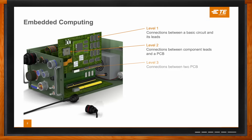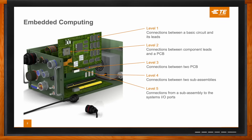Level three — you're looking at connectors that go between two different PCBs, like a plug-in card and the motherboard. Level four would be a connection between two sub-assemblies within the same chassis. Level five covers connections from a sub-assembly to the IO ports on the outside of the chassis. And then finally, level six is a connection to the outside world between physically separated systems.